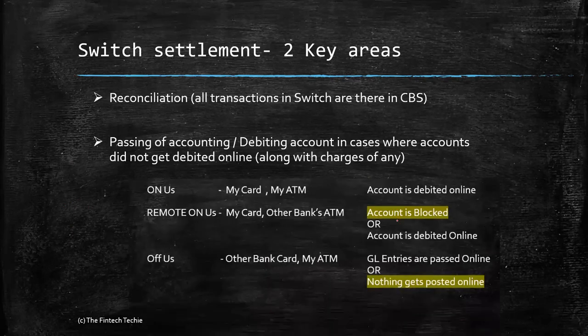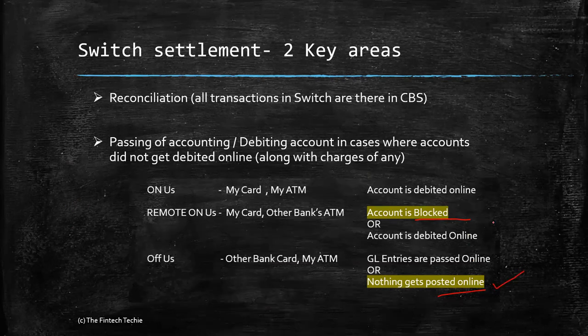If you recollect from our earlier slide, there were two scenarios: one for remote owners and another for office transactions. As part of the settlement file, the accounting entries are debited — for remote owner cases where initially the amount was blocked, or for office transactions. As part of the file upload, the office entries are passed, or in the case of remote owners, the block is removed and the accounting entries are posted. For these two scenarios, the settlement file is used.